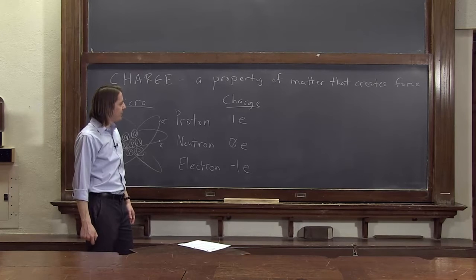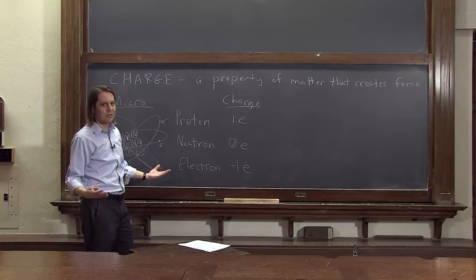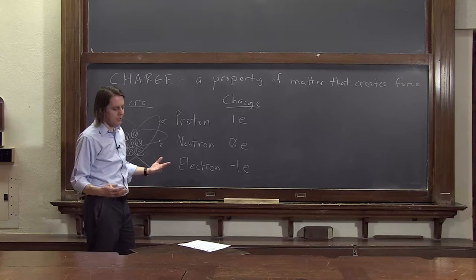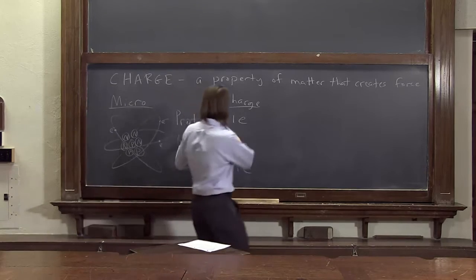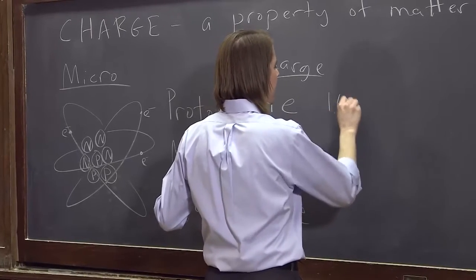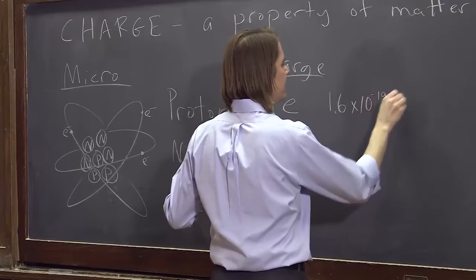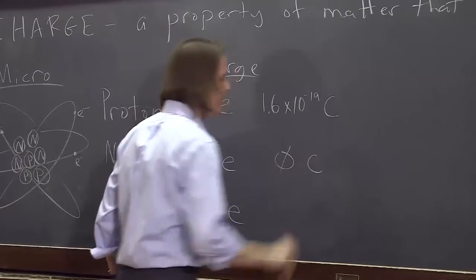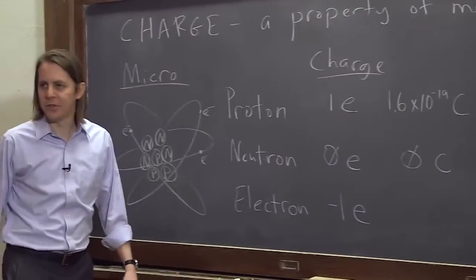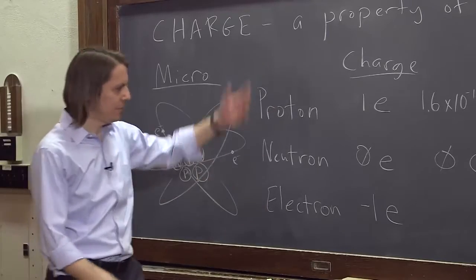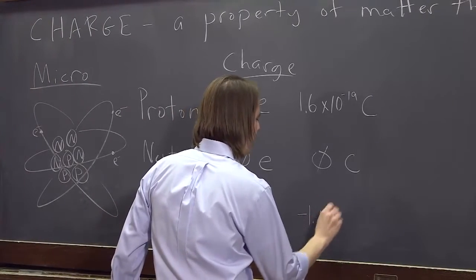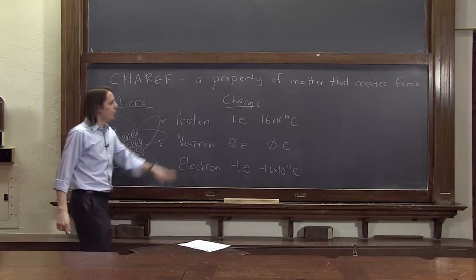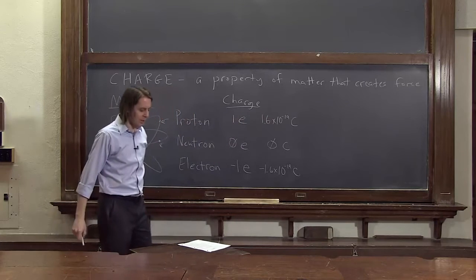We can think about the difference between the microscopic and the macroscopic scales by also giving you the charges in terms of the macroscopic unit of charge, which is the Coulomb. So the charge of a proton in Coulombs is 1.6 times 10 to the minus 19 C for Coulomb. The charge of the neutron is 0 C. Regardless of the unit, it is 0. And the charge of the electron is the same, it's just negative, minus 1.6 times 10 to the minus 19 Coulombs.